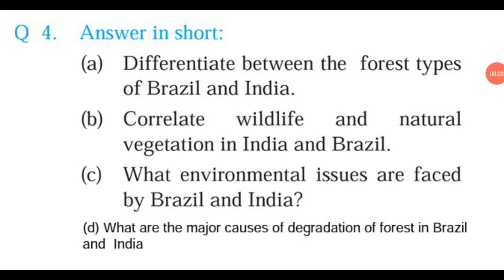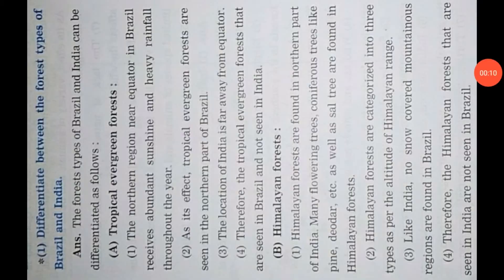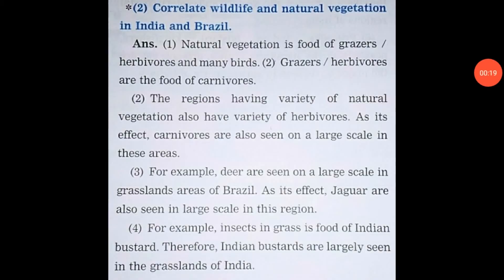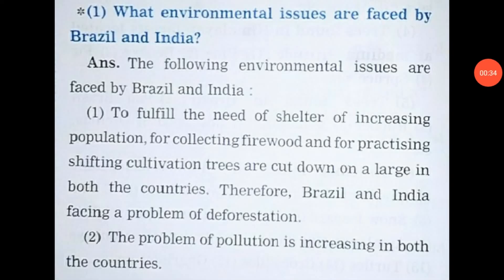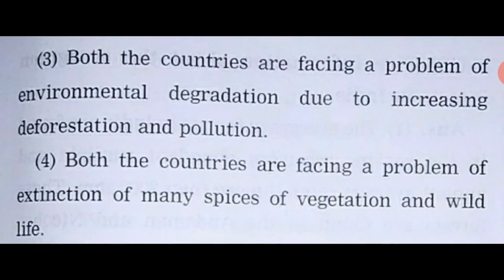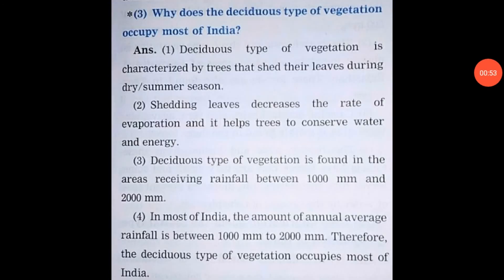This is question number 4 — Answer in short. There are 5 questions in this. The 1st answer: Differentiate between the forest types of Brazil and India. The 2nd: Correlate wildlife and natural vegetation in India and Brazil — there are 8 points in this. The 3rd: What environmental issues are faced by Brazil and India? The 4th: What are the major causes of degradation of forest in Brazil and India? The 5th: Why does the deciduous type of vegetation occupy most of India?